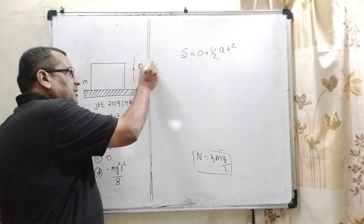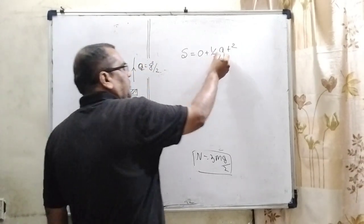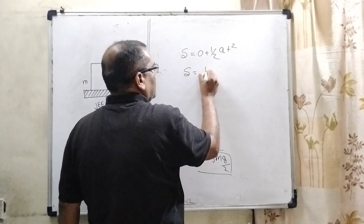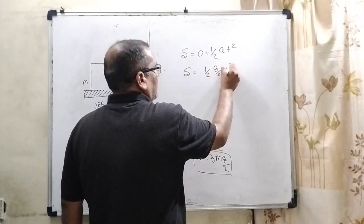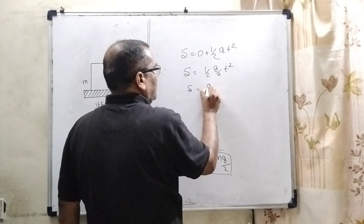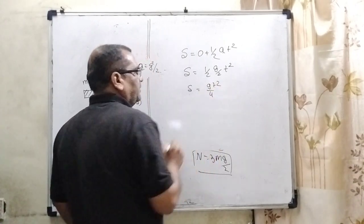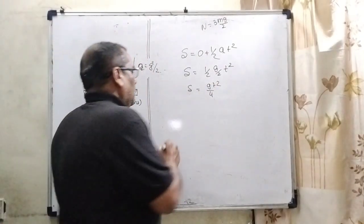The body is going up. Acceleration is g/2. So we substitute the value of acceleration: s equals (1/2)(g/2)t². So we get gt²/4.